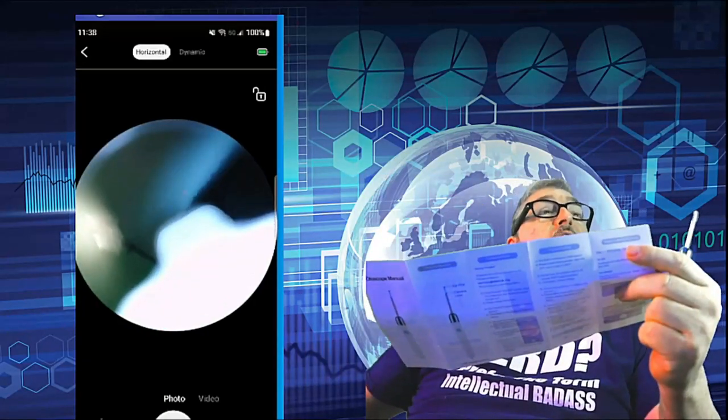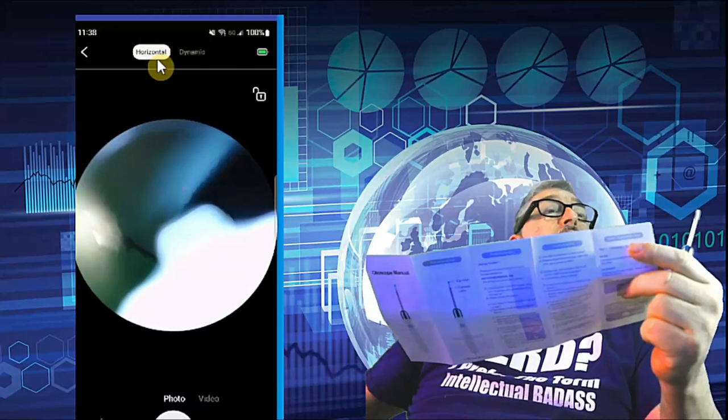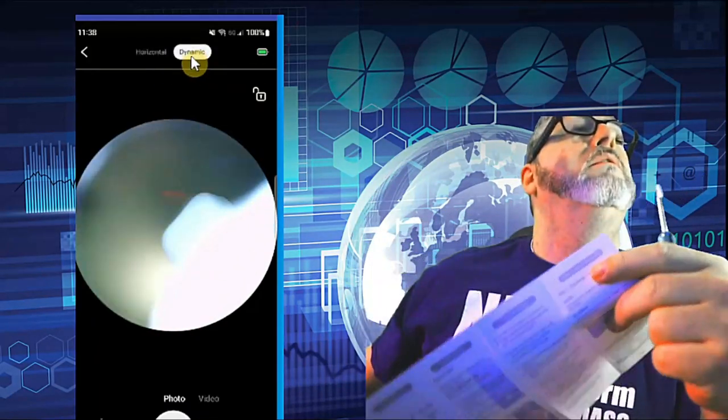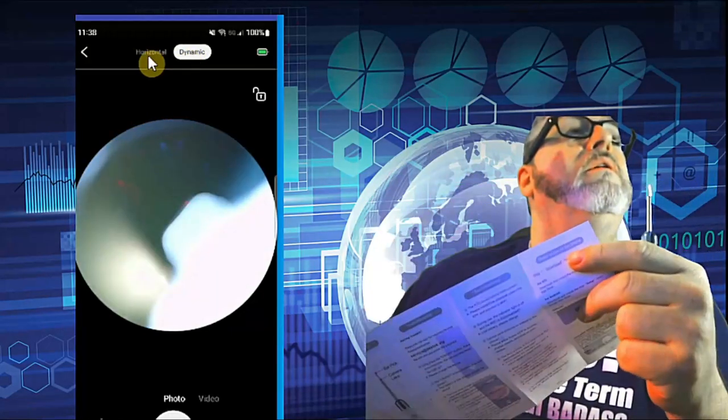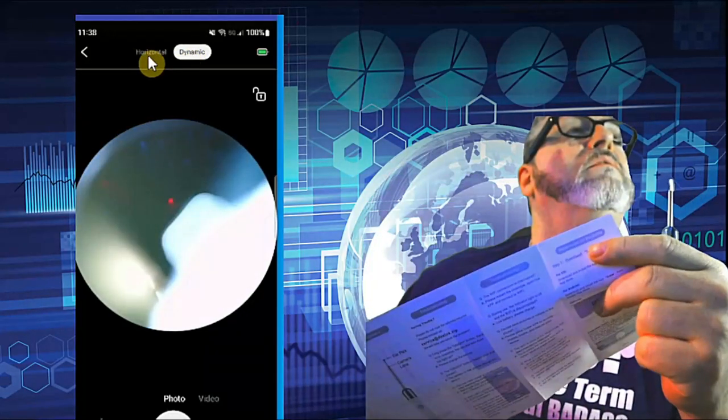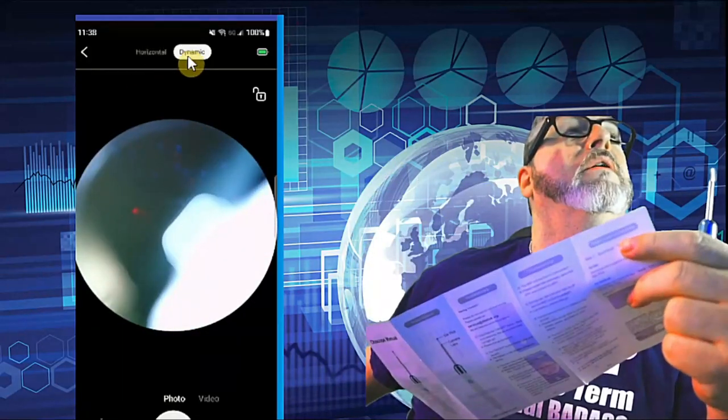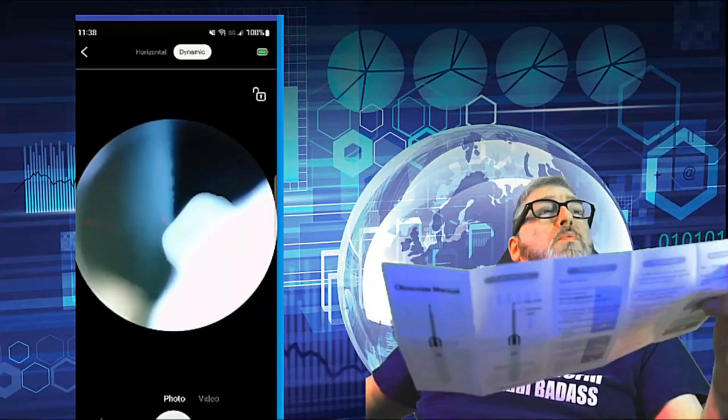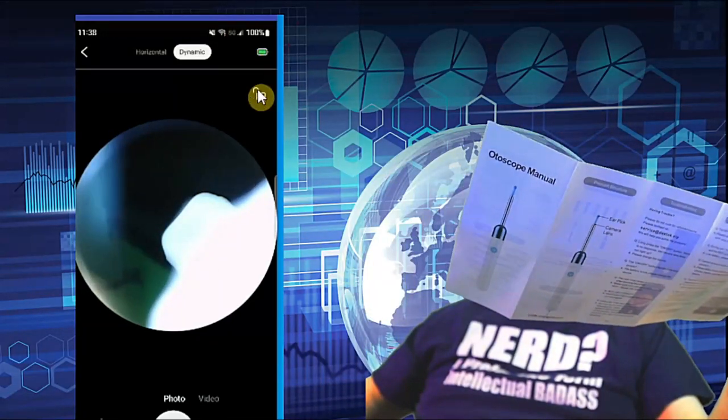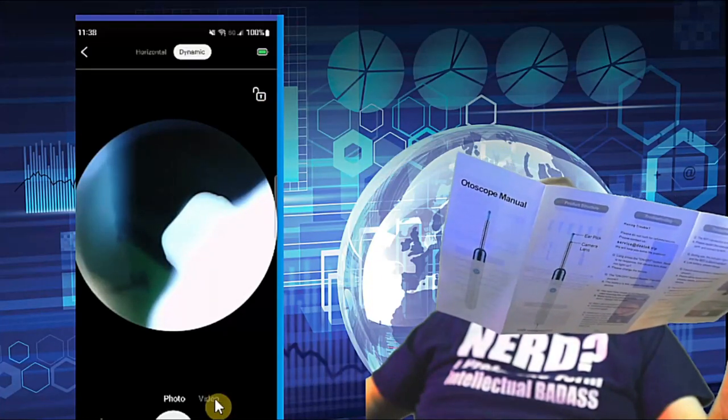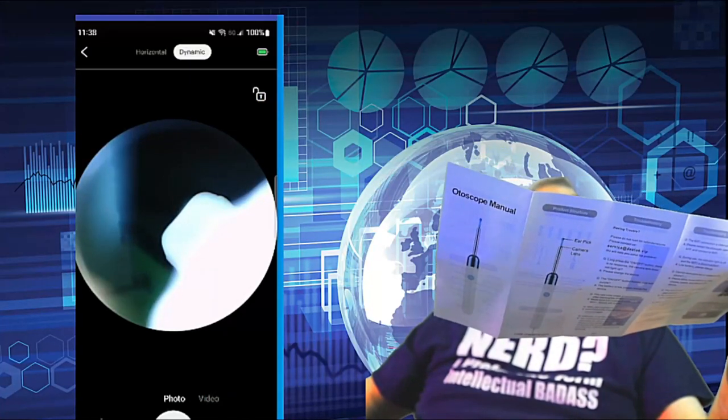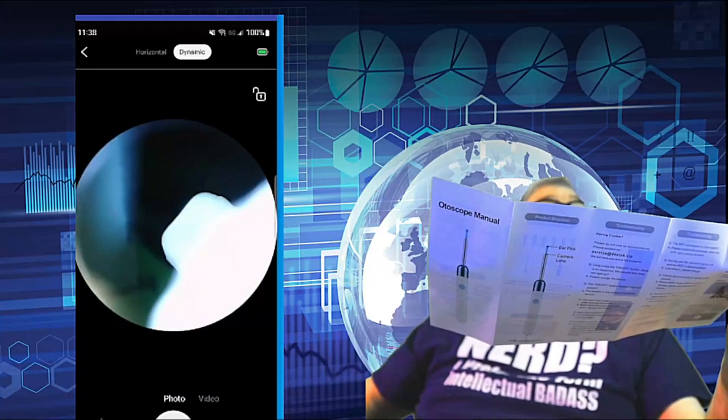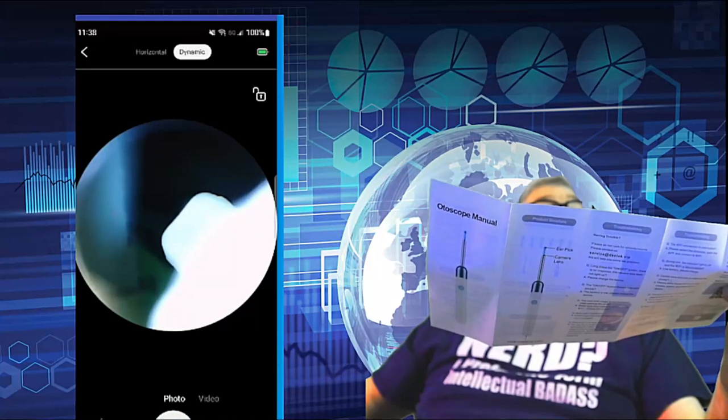So I guess we look at our interface. What is, let's see what all this stuff is. Horizontal, so dynamic, okay, that is interesting. That keeps the image steady, that allows it to float around. I prefer that. We have it, we can see the battery charge here. We can lock this. We can do video.